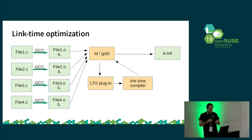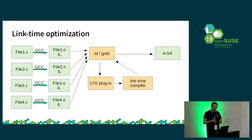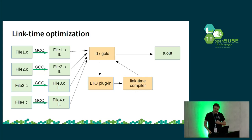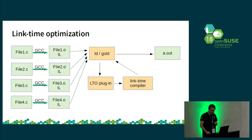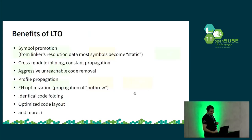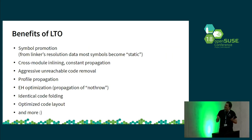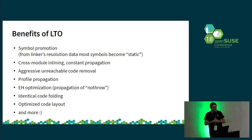LTO is kind of a change to the whole toolchain. It's not only changing the compiler — you need to change the linker, ar, and all other tools which hold your object files, because all of them have to understand that object files can now be either real object files or fake ones. The reason we do this is to get better code quality. If you have the link time optimizer, you know much more than you know at compile time.